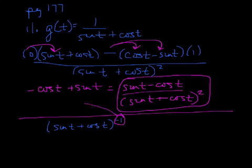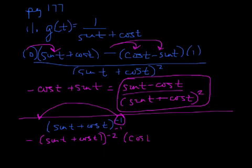So I have negative sine of t plus cosine of t, subtract 1 from your exponent, so that gives me negative 2, times the derivative of what's inside. Derivative of sine is cosine, derivative of cosine is negative sine. And it looks like this thing, so it's the same, right?